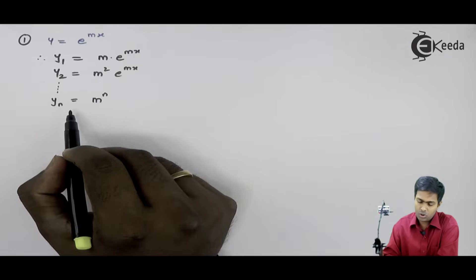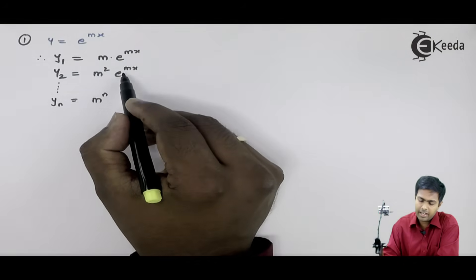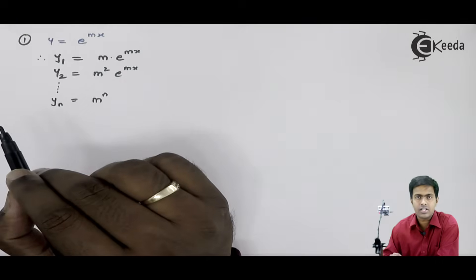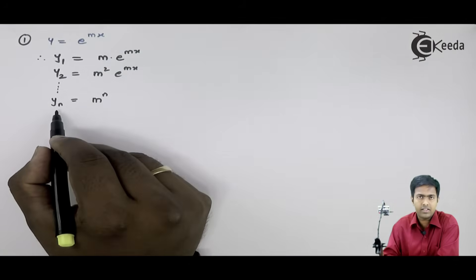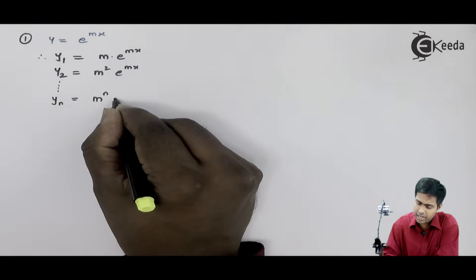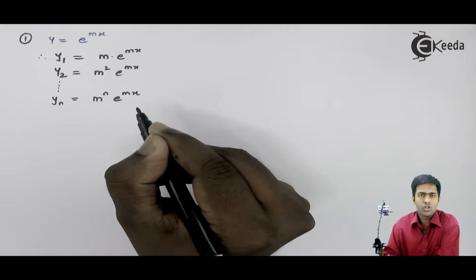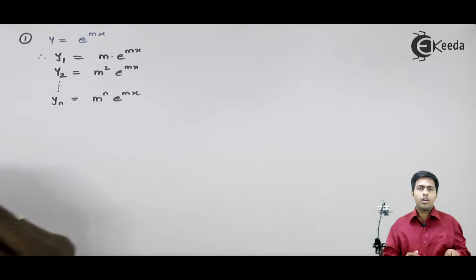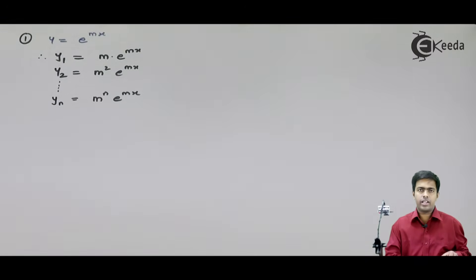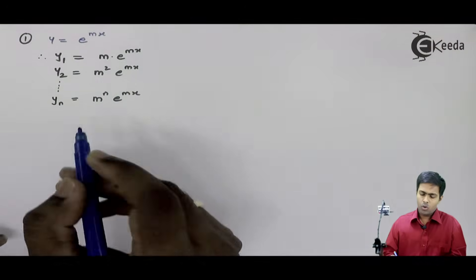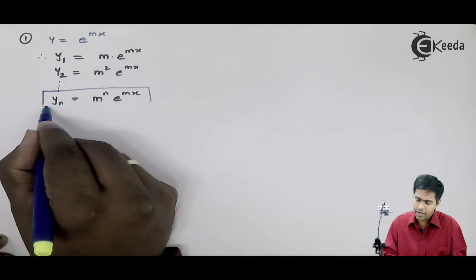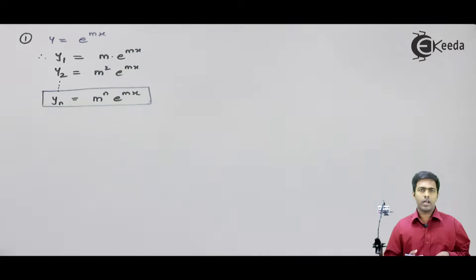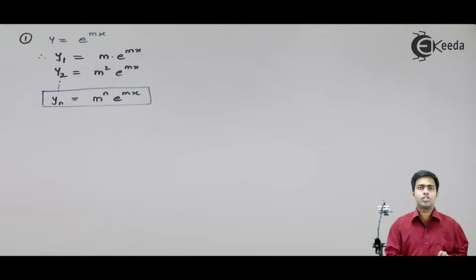So, can I say that in the nth derivative, the power will be n? Yes, definitely. Similarly, the e raise to mx term remains the same in all the derivatives. So I can say that in the nth derivative, e raise to mx will also be there. The formula for y equal to e raise to mx is: y_n equals m raise to n into e raise to mx. This is the nth derivative of e raise to mx.